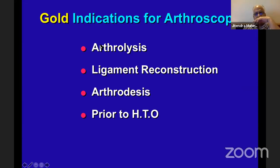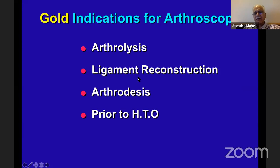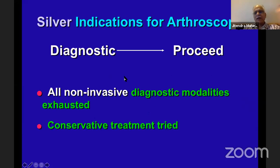As you grow better, you can take up more difficult cases. Arthrolysis is more or less a magic treatment for a stiff knee — patients are so grateful because with almost no major surgery you've got their knee bending further. If you learn more: ligament reconstruction, arthroscopic treatment of osteochondral disease. These are all indications where arthroscopy serves a distinct purpose and the patient can feel the difference.